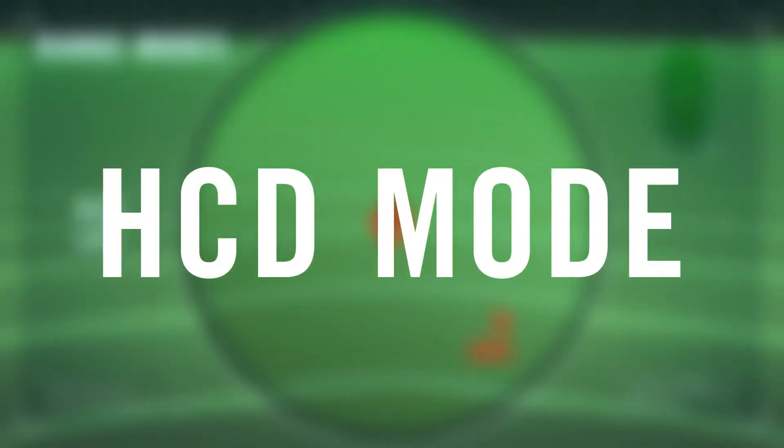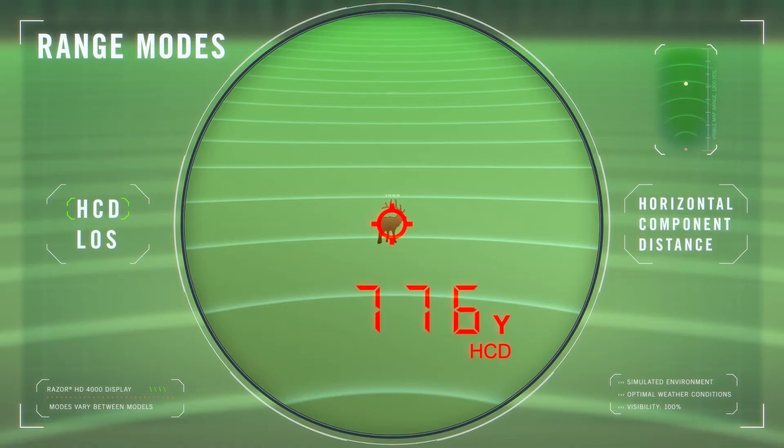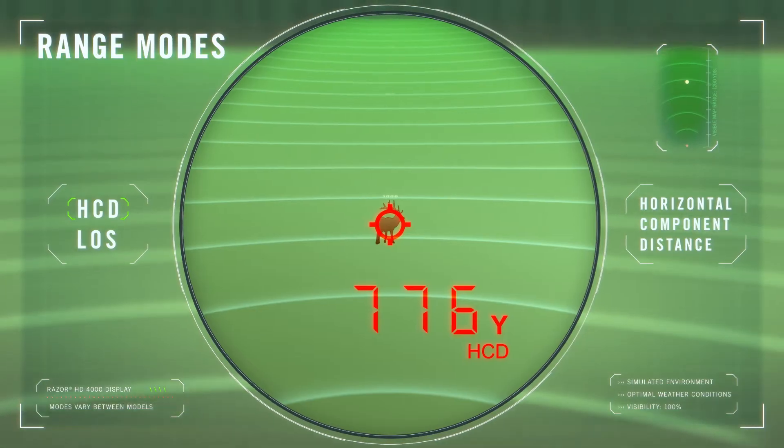HCD mode or horizontal component distance mode is the default and primary mode for most rifle and archery applications. HCD mode displays the slope angle compensated distance to the target.